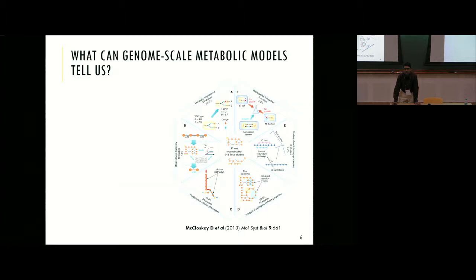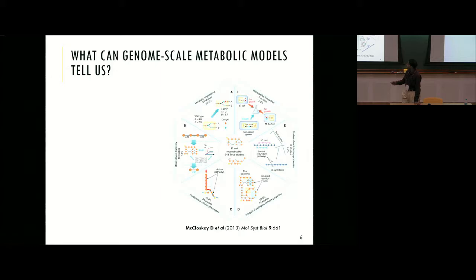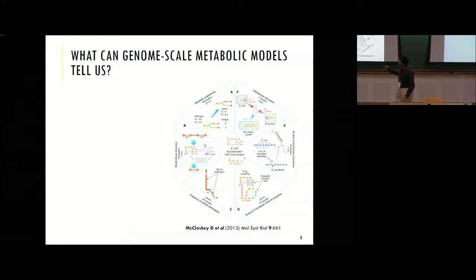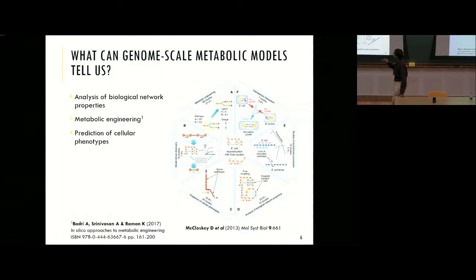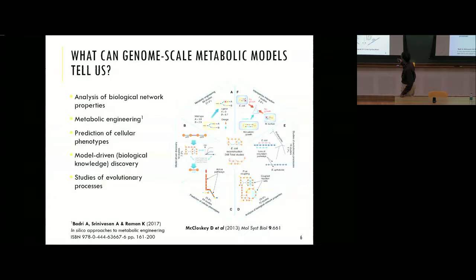A large number of studies looked at biological network properties, nearly a quarter looked at predicting cellular phenotypes, and about 27 percent looked at metabolic engineering. My favorite application is understanding inter-species interactions — if you put two yeast together, how do they interact? What metabolites do they exchange? Do they grow better, grow slower, kill each other, or out-compete each other? These are the questions you want to answer based on different kinds of metabolic models. There is a lot of model-driven biological discovery and studies of evolutionary processes.